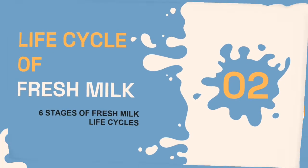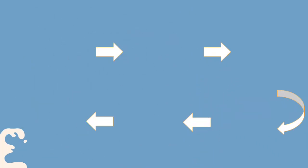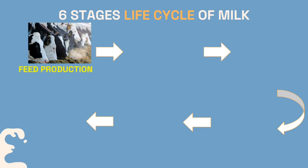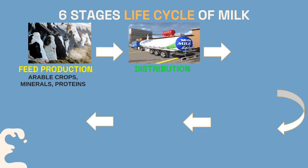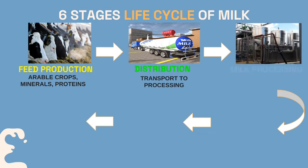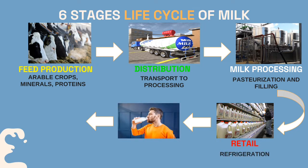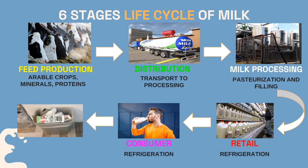Next, we are going to see the six stages of the fresh milk life cycle. The first stage is feed production, where the cattle are fed with arable crops, minerals, and proteins. The second stage is distribution, where cow milk is transported to a processing facility. The third stage is milk processing, where fresh milk goes through pasteurization and filling. Then retail, where processed fresh milk is refrigerated in the store, followed by the consumer stage, and finally the end-of-life stage, where disposal of packaging takes place.